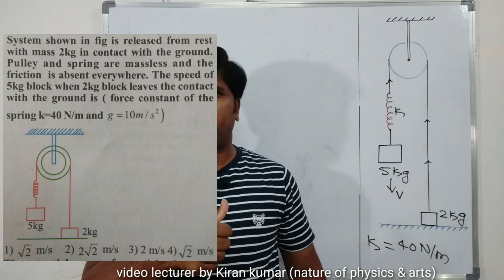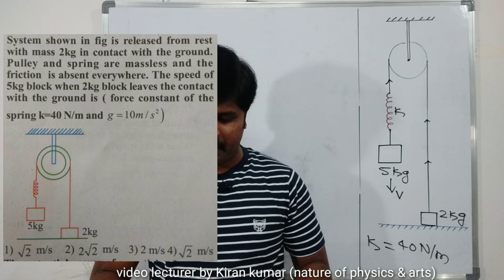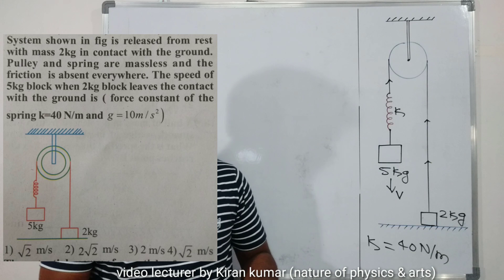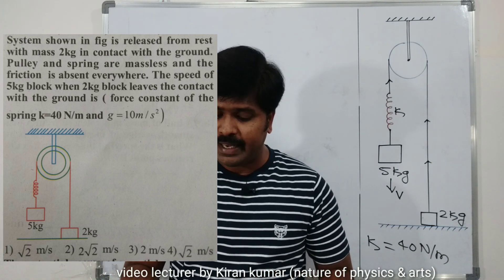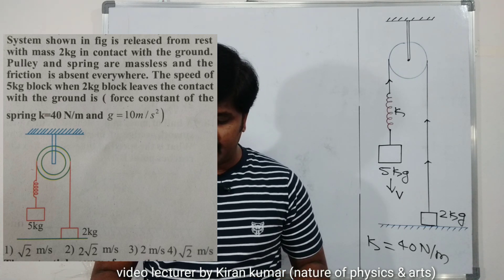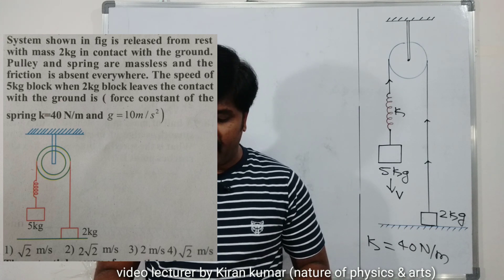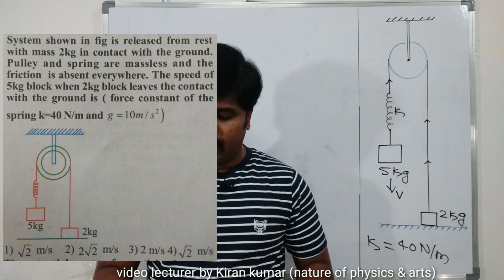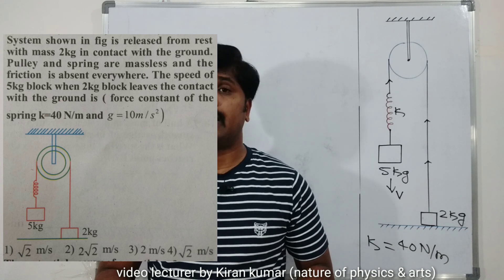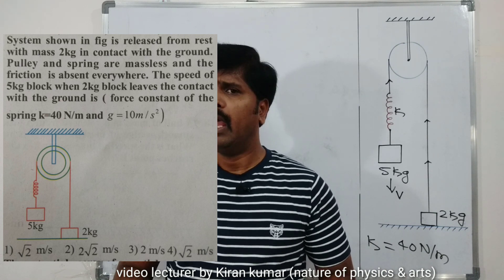Hi, I'm Kiran Kumar. Today's numerical is from Work, Energy and Power. A system is shown in the figure, released from rest, with a mass of 2 kg in contact with the ground. The pulley and spring are massless and friction is absent everywhere. We need to find the speed of the 5 kg block when the 2 kg block leaves contact with the ground. The force constant is 40 N/m and g = 10 m/s².